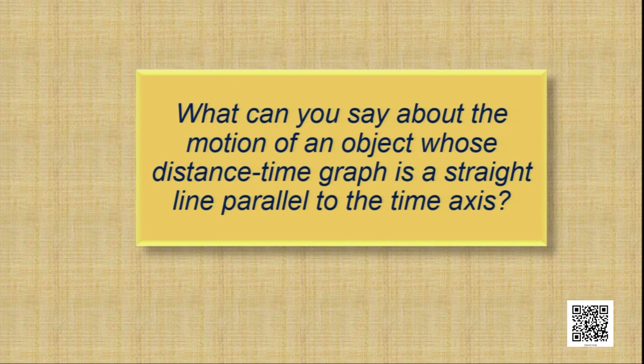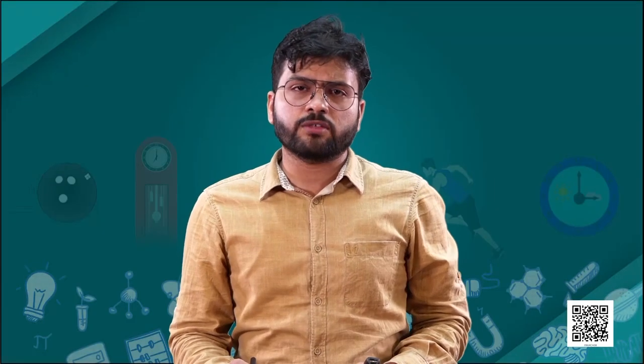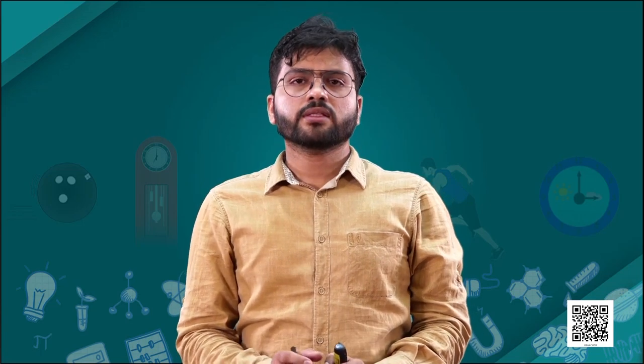Coming to the last question: what can you say about the motion of an object whose distance-time graph is a straight line parallel to the time axis? If the graph is parallel to the time axis, at any instant of time the distance of the object remains the same — the distance from the origin is not changing. That means the object is not moving, or we can say the object is at rest.